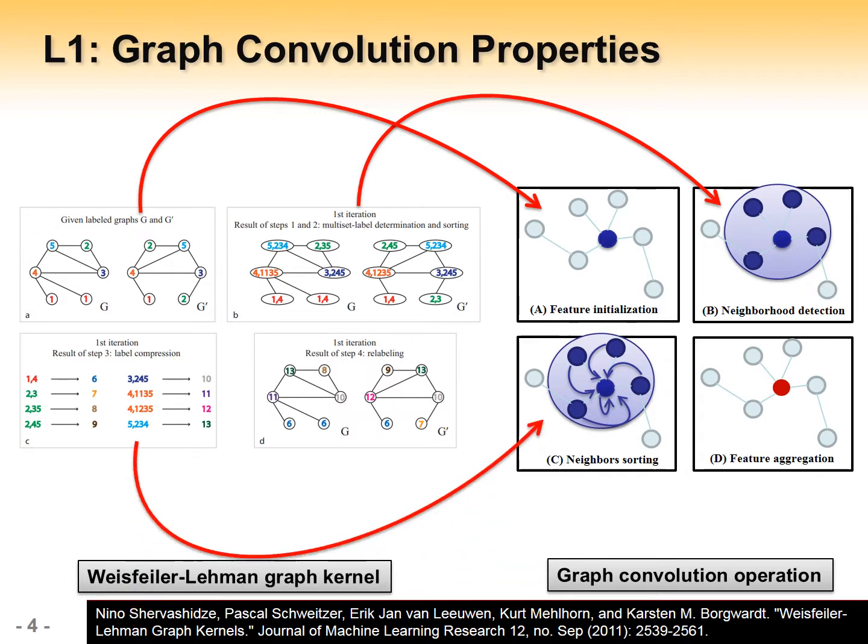And then sort the neighbors. Finally, it aggregates the features from neighbors and the node seed itself into a new representation. Thus the learned node representation is actually a representation of the subtree around the node.